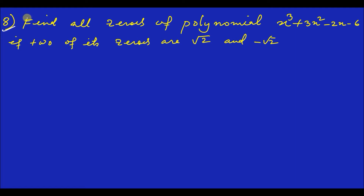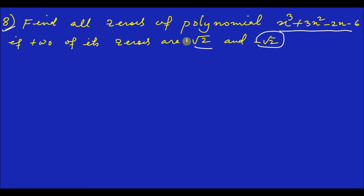We are going to discuss the zeroes of polynomials. We are going to discuss in detail the zeroes of the polynomial x cubed plus 2x squared minus 2x minus 6, if 2 of its zeroes are root 2 and root minus 2. So the zeroes of the polynomial are root 2 and negative root 2.